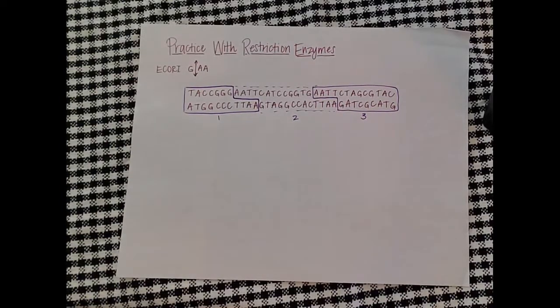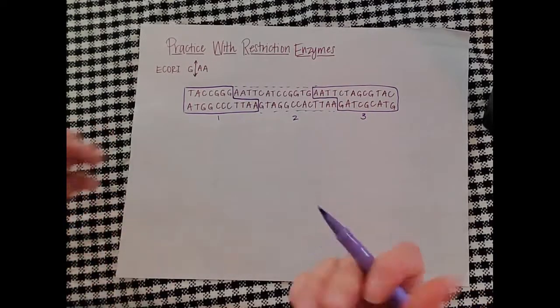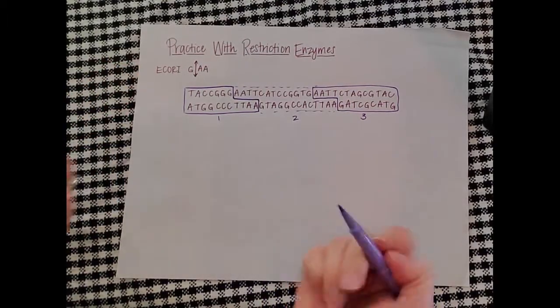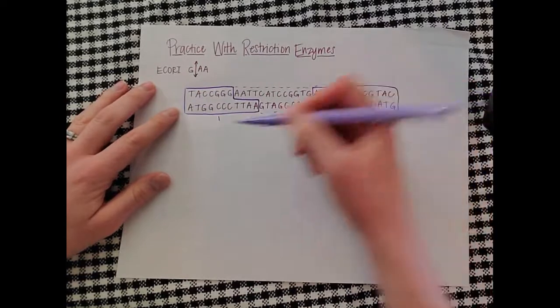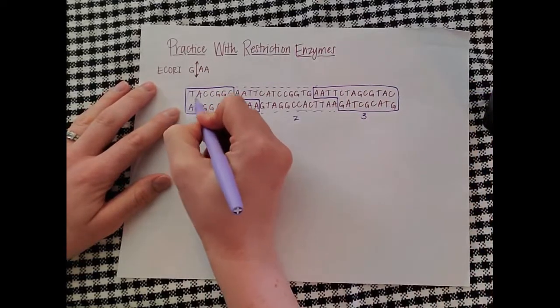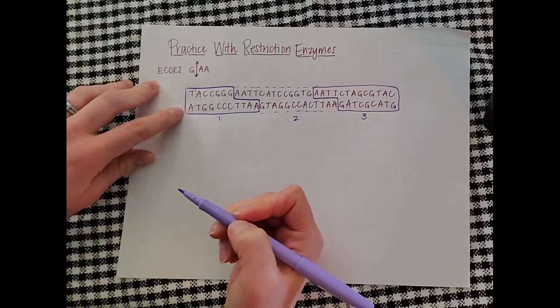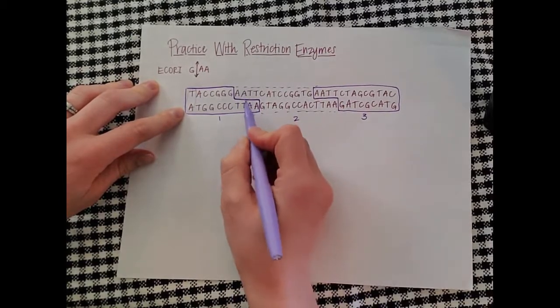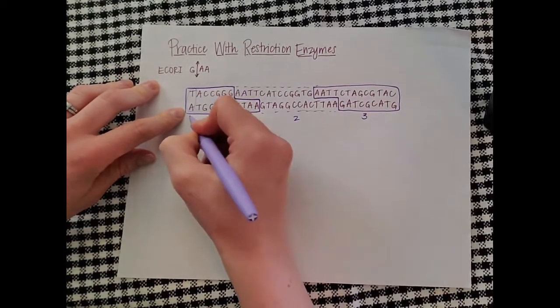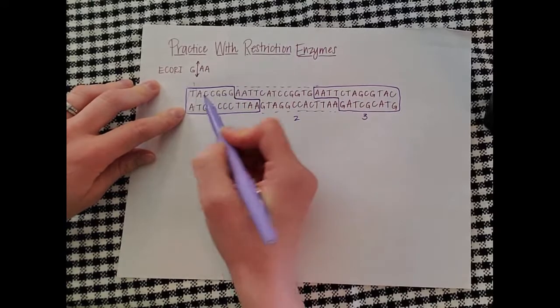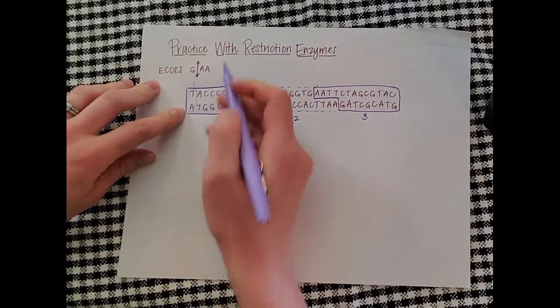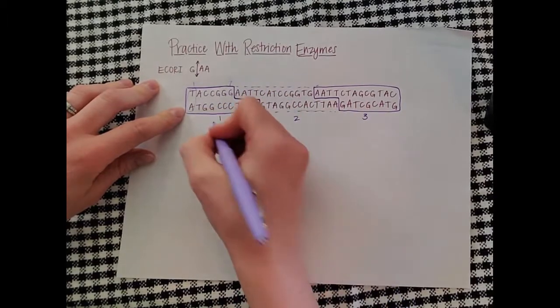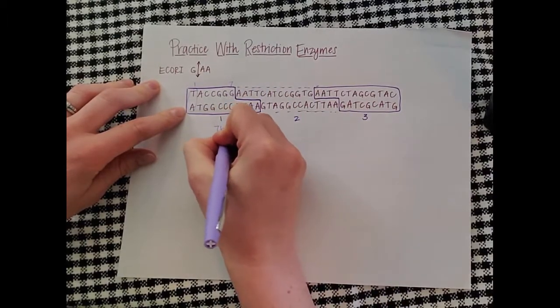And the best thing to do after this point is go ahead and count the base pairs that you have. Now you only count full base pairs. So right here, let's start from this end. This is a full base pair. It's paired up. Nothing's hanging off. Nothing's missing from that sticky end that we've created by making this cut. So that's considered one base pair. So if we go across, we have one, two, three, four, five, six, seven complete base pairs. So this one has seven base pairs.